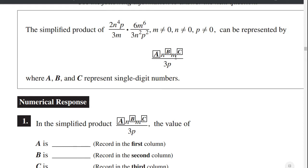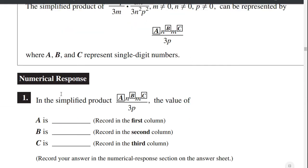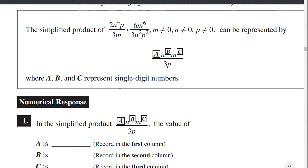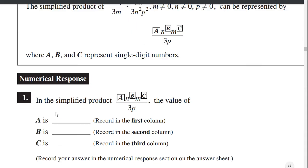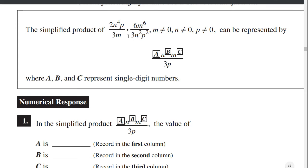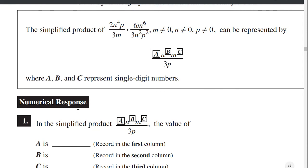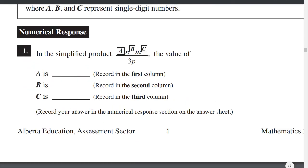What about c? c is the exponent of m. We have a 6 up here and a 1 down here. 6 minus 1 is 5, so c equals 5. To summarize: a is 2 times 6 divided by 3, which is 4. b is 4 minus 2, which is 2. And c is 5. So your answers are 4, 2, 5.